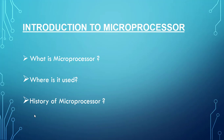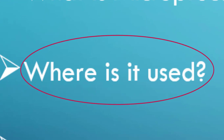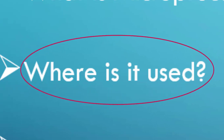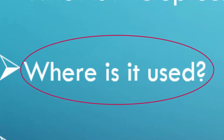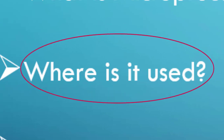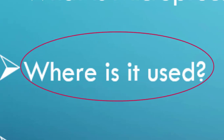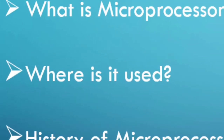Now, where are microprocessors used? As mentioned, mobiles and laptops are examples where microprocessors are used. But beyond that, the remotes of your electronic appliances like AC and TV also have microprocessors in them. Even traffic signals have some inbuilt microprocessors inside them.